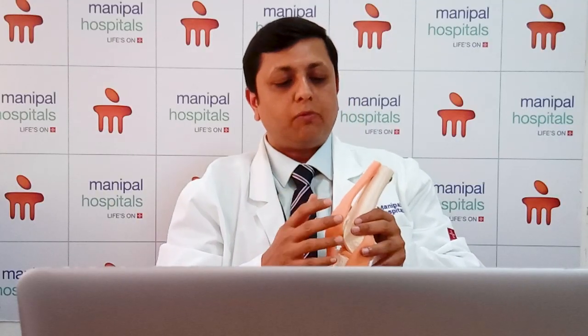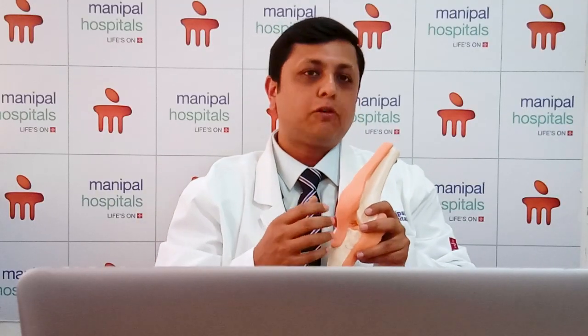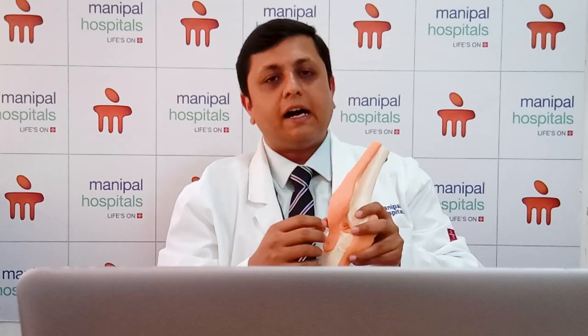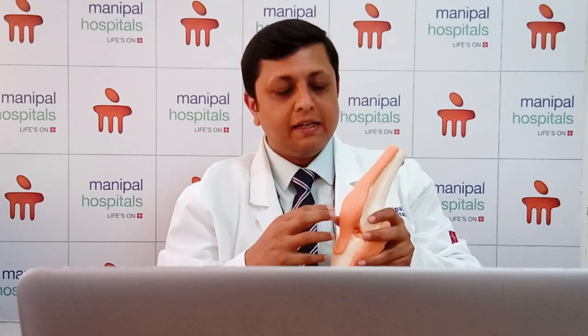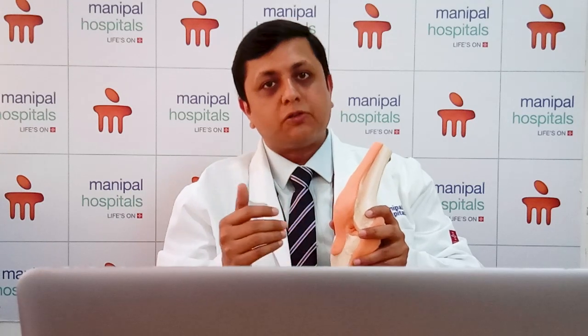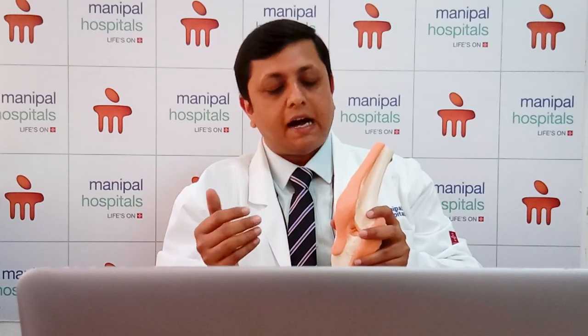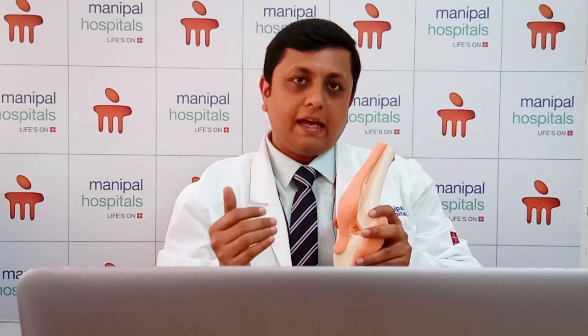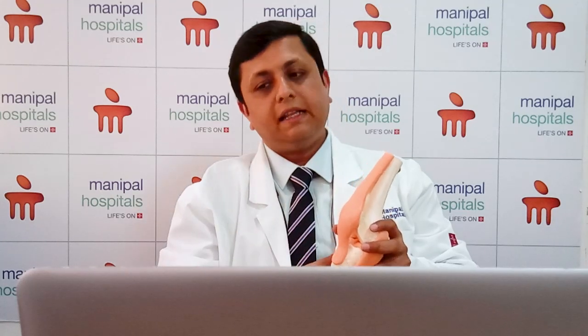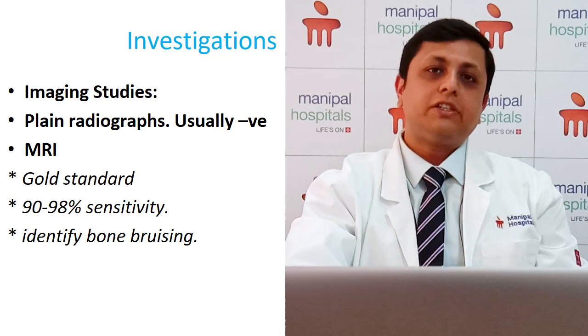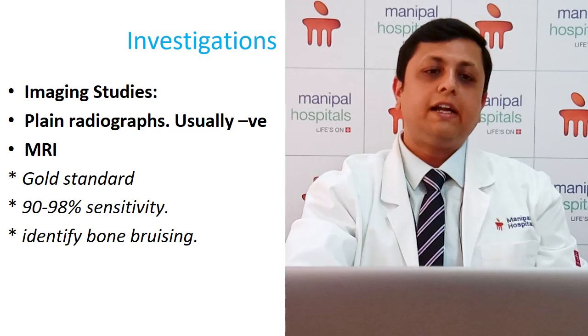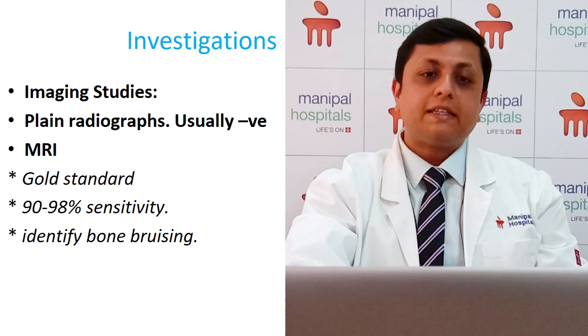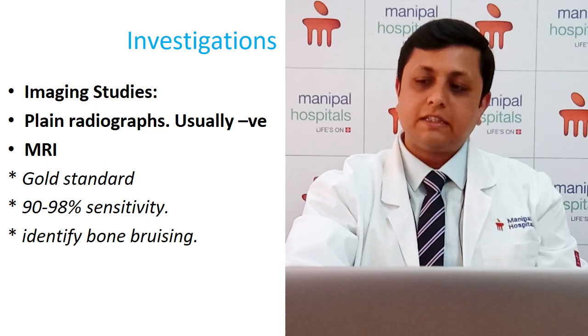Once we clinically suspect an anterior cruciate ligament injury, we ask for certain investigations. First is an X-ray to see if there is any bony injury involved, but on the X-ray we cannot visualize this ligament. So we always ask for an MRI scan to determine whether there is a tear — the MRI is the gold standard investigation for diagnosing ACL injury, with 90 to 98 percent sensitivity.